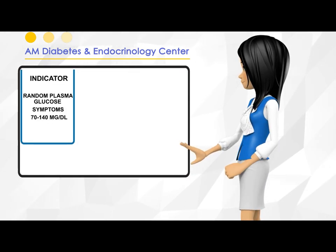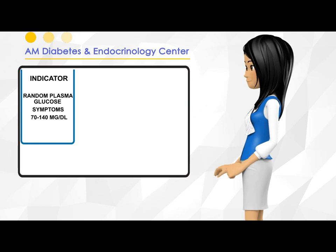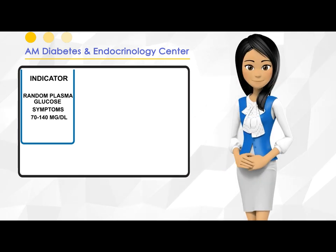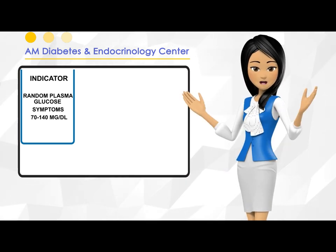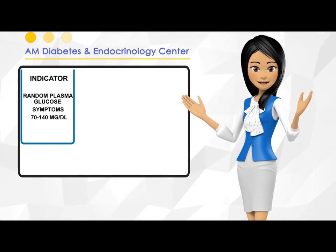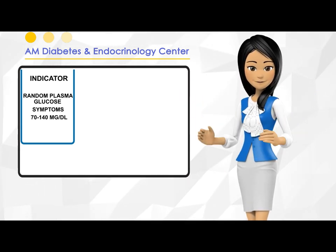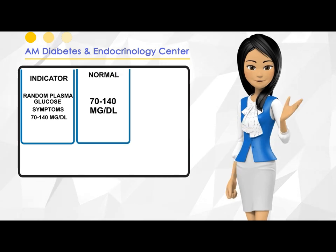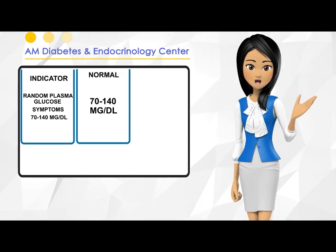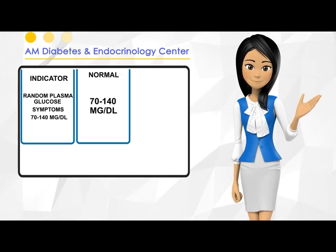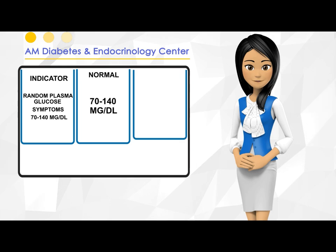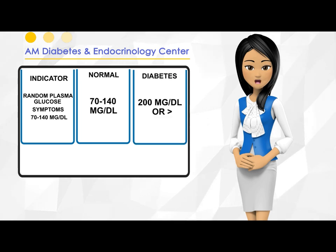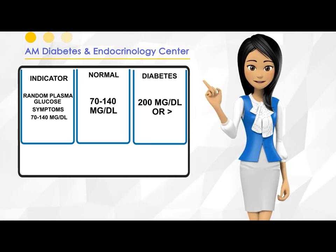Indicator: random plasma glucose and symptoms. Normal: 70 to 140 milligrams per deciliter. Diabetes: 200 milligrams per deciliter or greater.